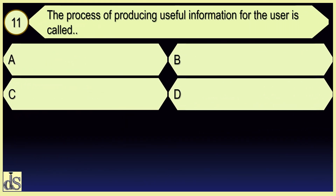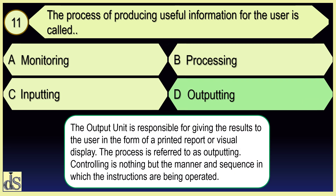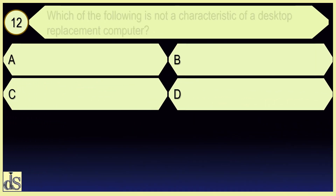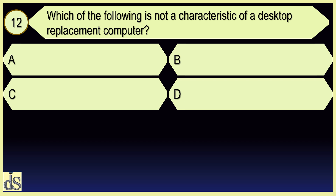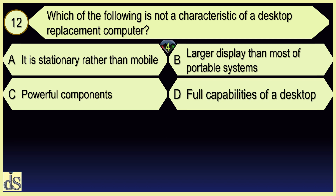The process of producing useful information for the user is called? Outputting.